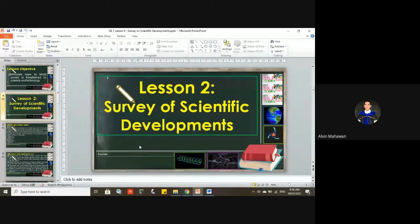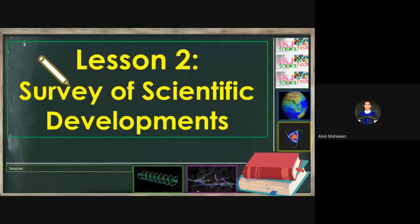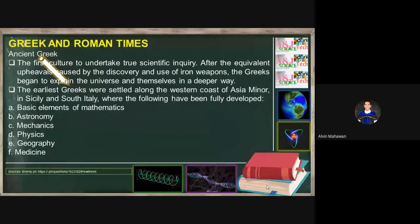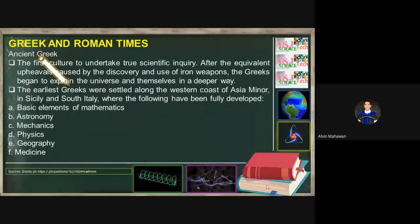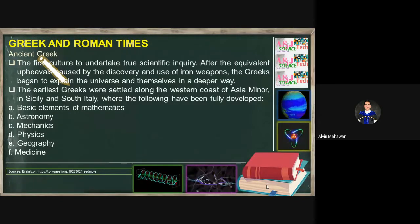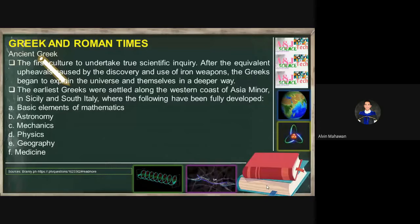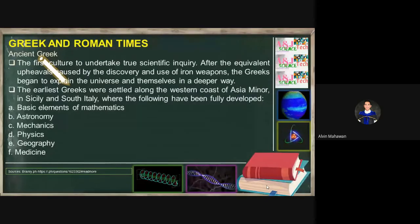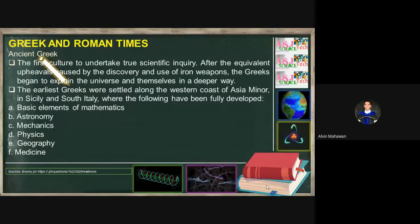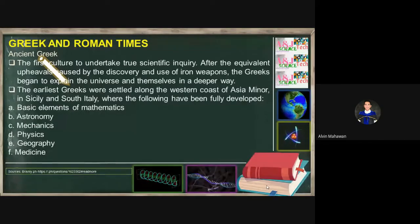Thank you very much, class. Perhaps majority of the class already have this knowledge. Of course, these keep coming back concerning those people involved in the development and discovery of various scientific knowledge. Let's continue. We're going to have the survey of scientific developments. In ancient Greek, the first culture to undertake scientific inquiry. Of course we know those from Aristotle, Plato, Thales, and even Democritus, Anaximenes, and many others during the Greek and Roman times. These are the things that gave the way on the discoveries being developed during the Greek and Roman times, and these are basic elements of mathematics, astronomy, mechanics, physics, geography, and medicine.